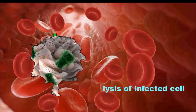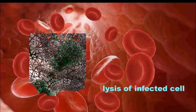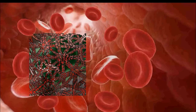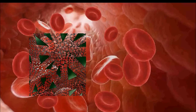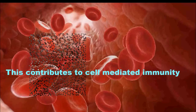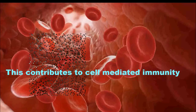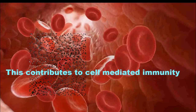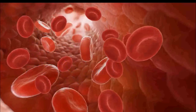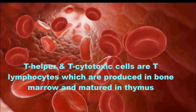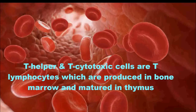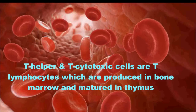This results in lysis of the infected cell, contributing to the cell-mediated immune response. T-helper and T-cytotoxic cells are T lymphocytes, which are produced in bone marrow and matured in the thymus.